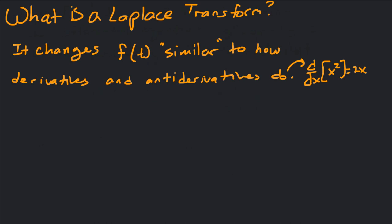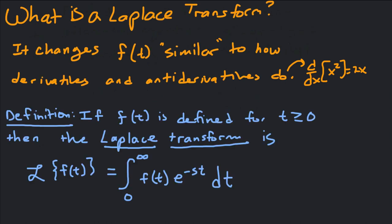Maybe later we'll try to get into what the Laplace transform is doing for us conceptually. So the definition says: if f(t) is a function defined for t ≥ 0, then the Laplace transform of that function is the integral from 0 to infinity of f(t) · e^(-st) dt. This takes our function — which is a function of t — and turns it into a function of some other variable s, which we call capital F(s).